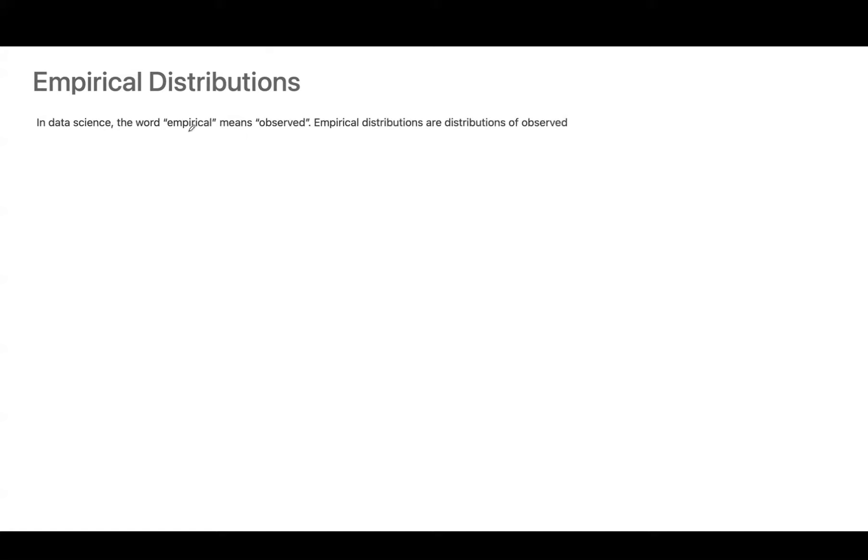On the topic of empirical distributions: in data science and statistics, the word 'empirical' means observed. Empirical distributions are distributions of observed data, such as data in random samples.